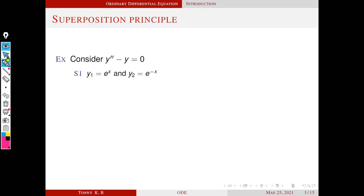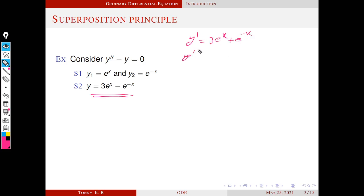Next, we consider some special cases. Consider y equals 3 e raised to x minus e raised to minus x — is it a solution? Yes, this is also a solution. You can verify that this function satisfies this differential equation. Simply find y dash, which is 3 e raised to x plus e raised to minus x, and y double dash, which is again 3 e raised to x minus e raised to minus x. Substituting, y double dash and y are the same, so their difference is zero.